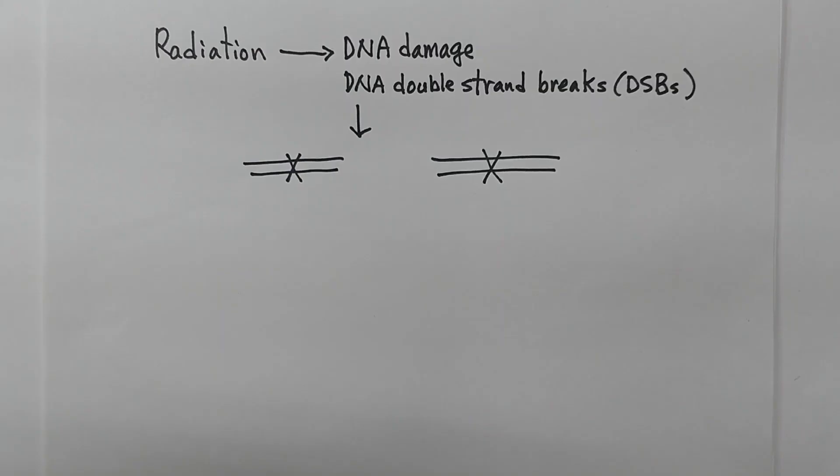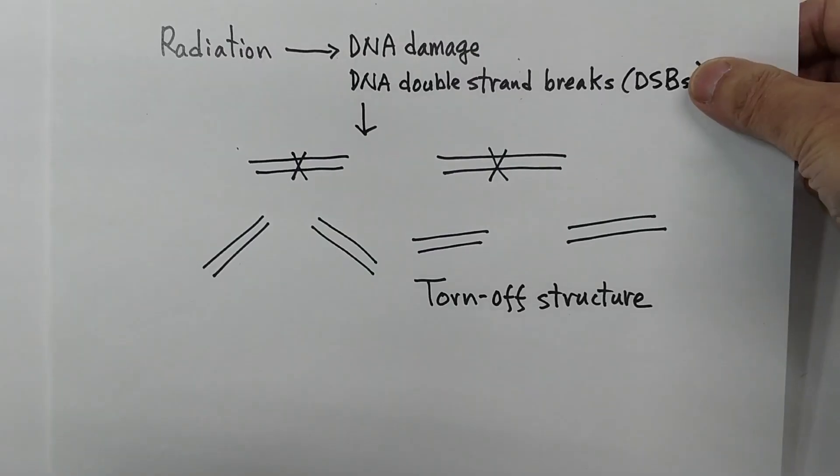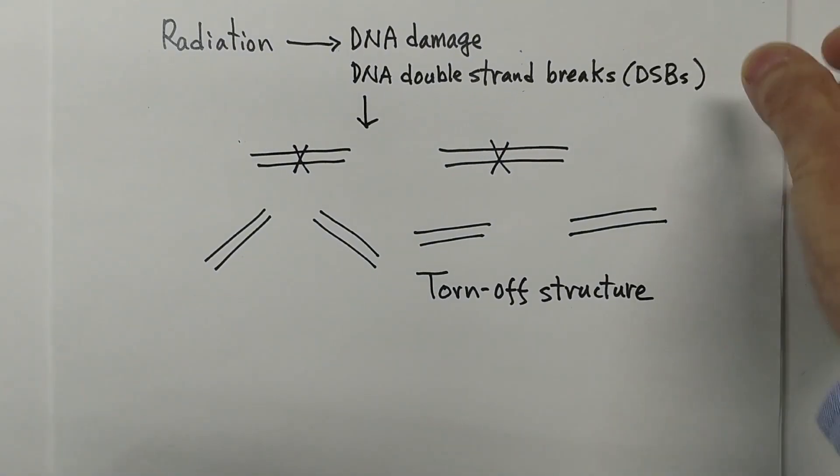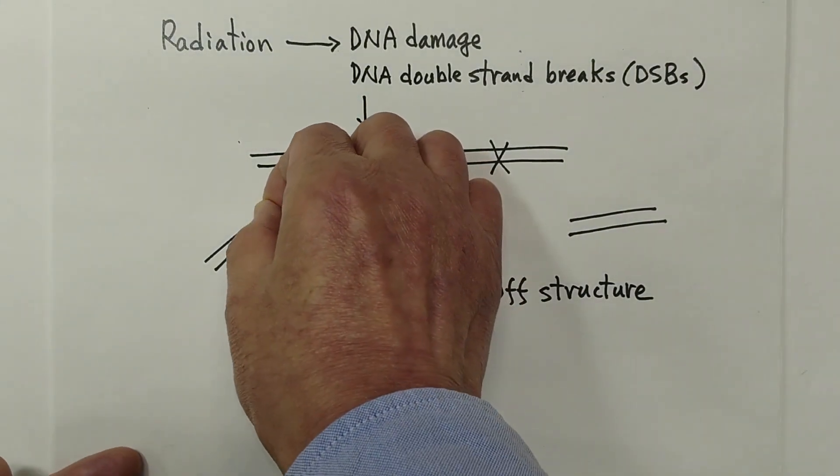Radiation exposure makes DNA damage, DNA double-strand breaks in cells. Most of them are repaired quickly, but a few of them remain in cell nucleus without being repaired.